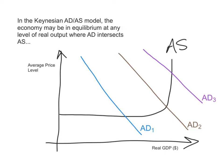In the Keynesian ADAS model, the economy may be in equilibrium at any level of real output where AD intersects AS. Here are three different situations of equilibrium. In all three cases, the economy is at equilibrium because the aggregate demand curve intersects the aggregate supply curve. Whether aggregate demand is at AD1, AD2, or AD3, anywhere where AD intersects the Keynesian aggregate supply curve is seen as the economy being at equilibrium.